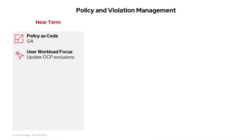Next, policy and violation management. In the near term, the focus is on policy as code, specifically its general availability. Policy as code lets you manage policies as custom resources in OpenShift, automating workflows with tools like OpenShift GitOps and Argo CD, with upcoming updates making it easier to specify notifiers and clusters by name while stabilizing the API. We also have a user workload focus, which groups violations into user workloads and platform workloads to reduce noise and remove unnecessary policy violations from platform-related components.